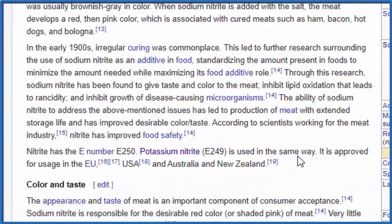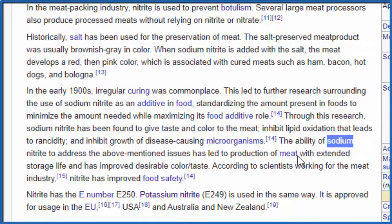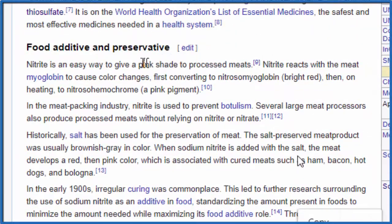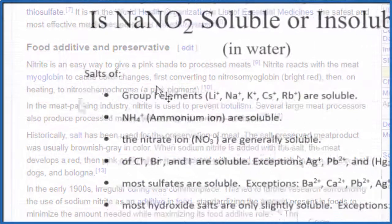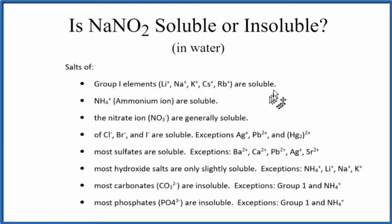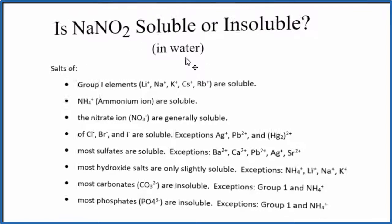They've used sodium nitrite to preserve meat for some time, and it actually gives meat a nice pink shade when processed, like hot dogs or bologna — a little known fact. Either way, according to the solubility rules and the actual experimental data, NaNO2 is soluble in water. This is Dr. B. Thanks for watching.